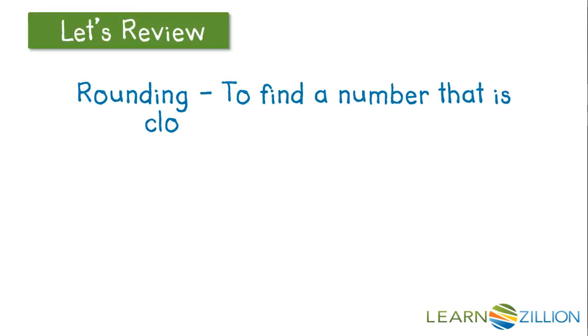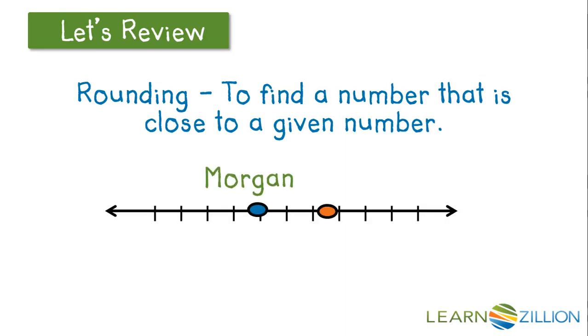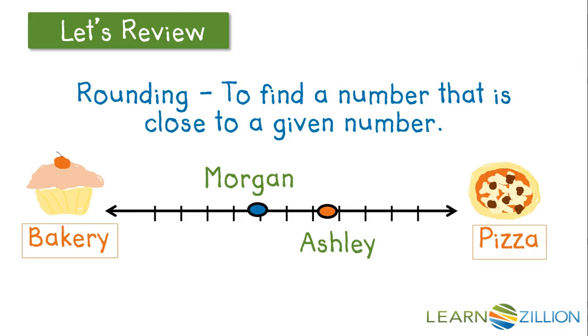Let's also review the definition of rounding. Rounding means to find a number that is close to a given number. Here we'll use a real-world example. Morgan is closest to the bakery, so she'll pick up the cupcakes. And Ashley is closest to the restaurant, so she'll pick up the pizza. The same is true for numbers on a number line. They will go to the nearest benchmark number.